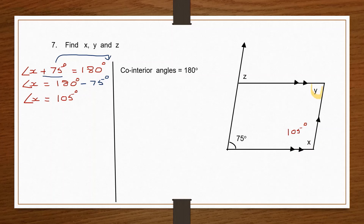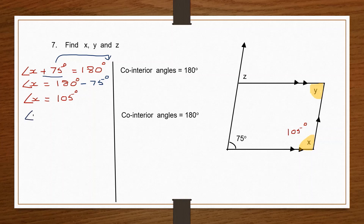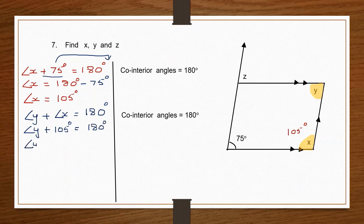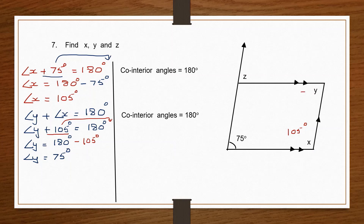Now let's find angle Y. Angle Y and angle X are also co-interior angles, so angle Y plus angle X should add up to 180 degrees. Angle Y plus 105 degrees equals 180 degrees, therefore angle Y equals 180 minus 105, which is 75 degrees.